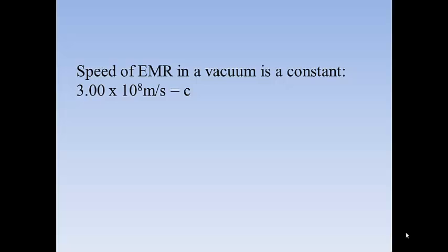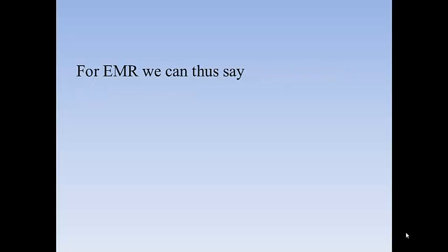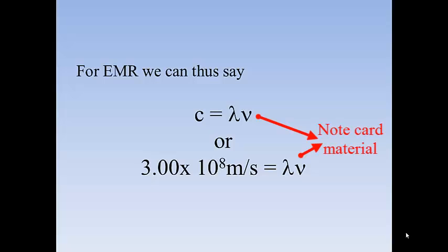That is the symbol that is used. And yes, this is the same C as in E equals MC squared. And so for EMR, we can say that C is equal to λν. But since we know what C equals, we can now say 3.00 times 10 to the 8th meters per second equals λν. Probably something you want to put on your note cards.